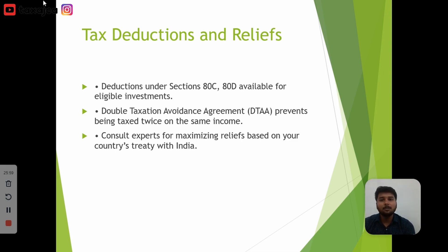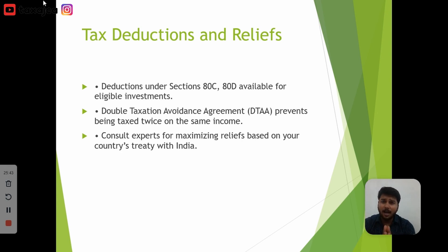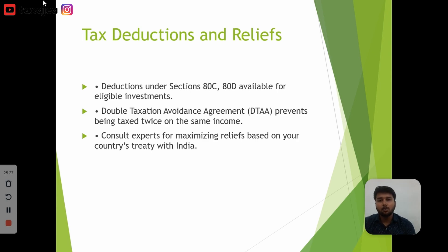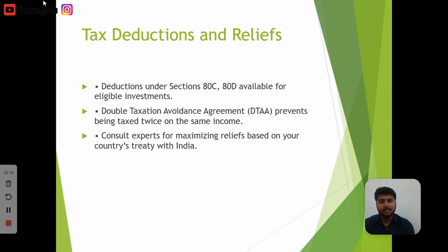However, double taxation is addressed through tax treaties. For example, if you have income of 10 lakhs and you have paid tax of 1 lakh in the US, you can claim relief in India. Under DTAA — Double Tax Avoidance Agreement — between two countries, you file Form 67 and attach Form 1042-S as tax evidence of tax paid in the US. You then claim relief through Form 67 in your ITR filing.